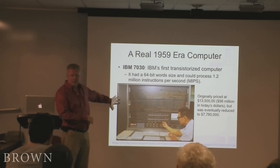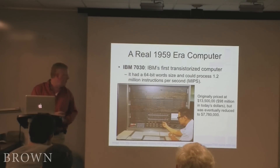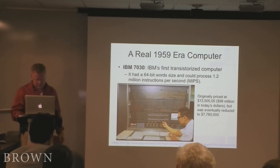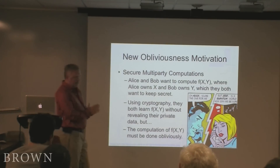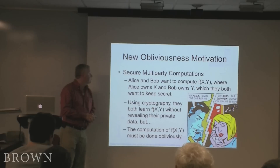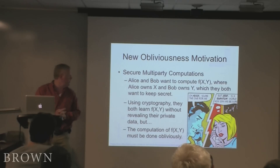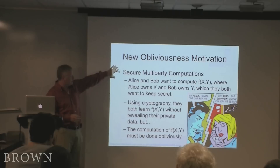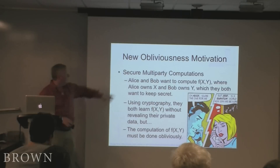They didn't sell too many, even at that price. But it represents an era of computing using transistors instead of vacuum tubes, which our whole discipline owes a great deal to. My actual motivation for studying data oblivious sorting was its application to computer privacy. There is a paradigm from the computer security literature known as secure multiparty computation. In a nutshell: Alice and Bob, two entities, want to compute some function f(x, y) where Alice owns x and Bob owns y.